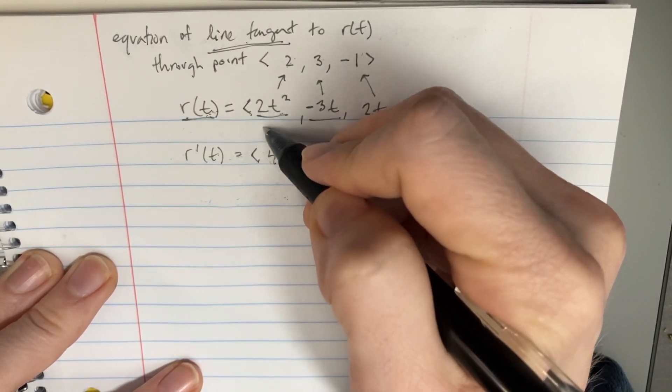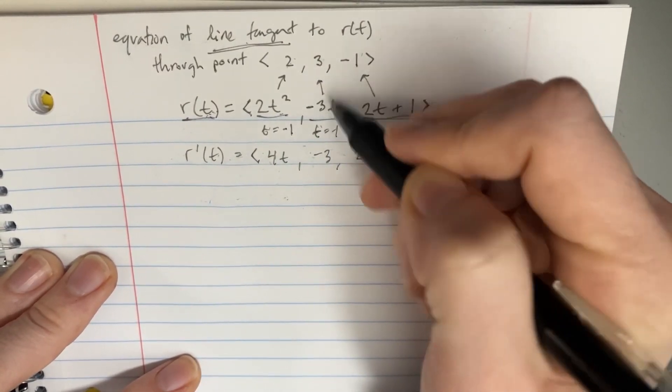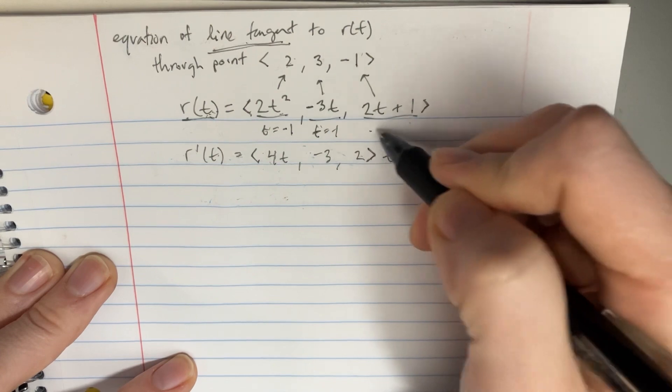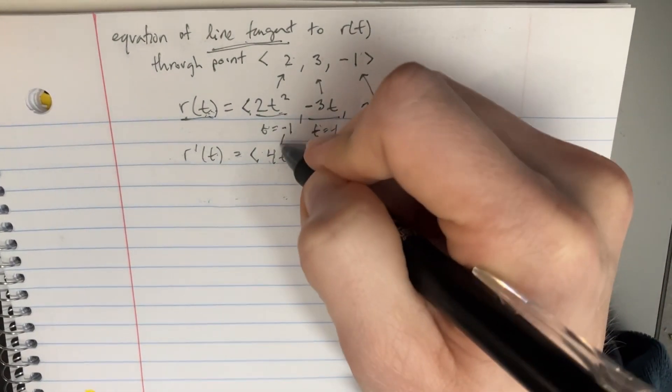We'll find that t would be equal to negative 1 because t would be equal to negative 1 there. It would make that work. And then t equals negative 1 again right here. So that would work. That's what we're going to use when we plug in right here.